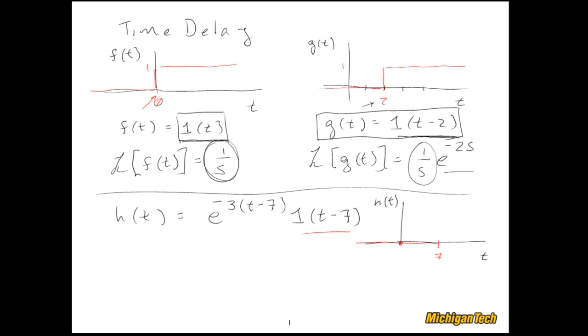At 7 seconds this turns on. Plug a 7 into that and we have e^0, which is 1, so it jumps up to 1 and then it exponentially decays down like so. So this is 1. There's a plot of our function.